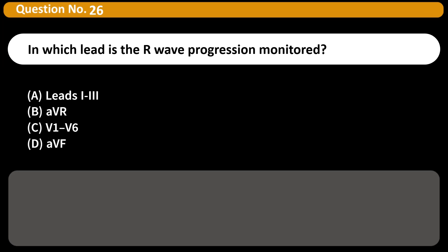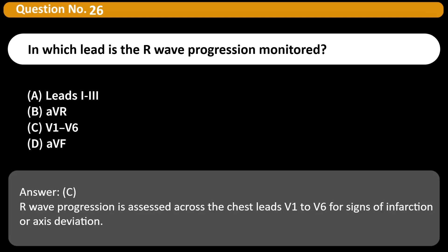In which lead is the R-wave progression monitored? A. Leads 1 to 3 B. AVR C. V1 to V6 D. AVF Answer C. R-wave progression is assessed across the chest leads V1 to V6 for signs of infarction or axis deviation.